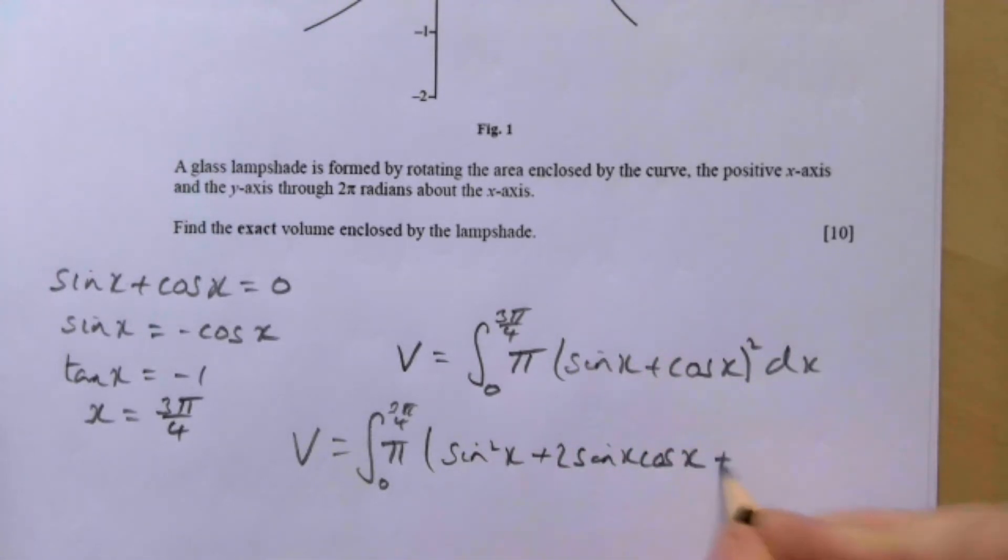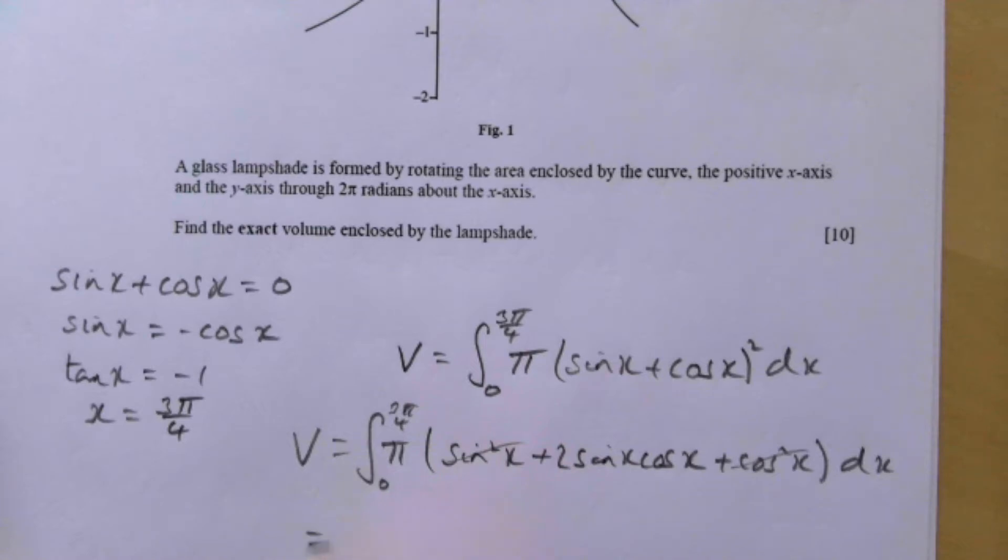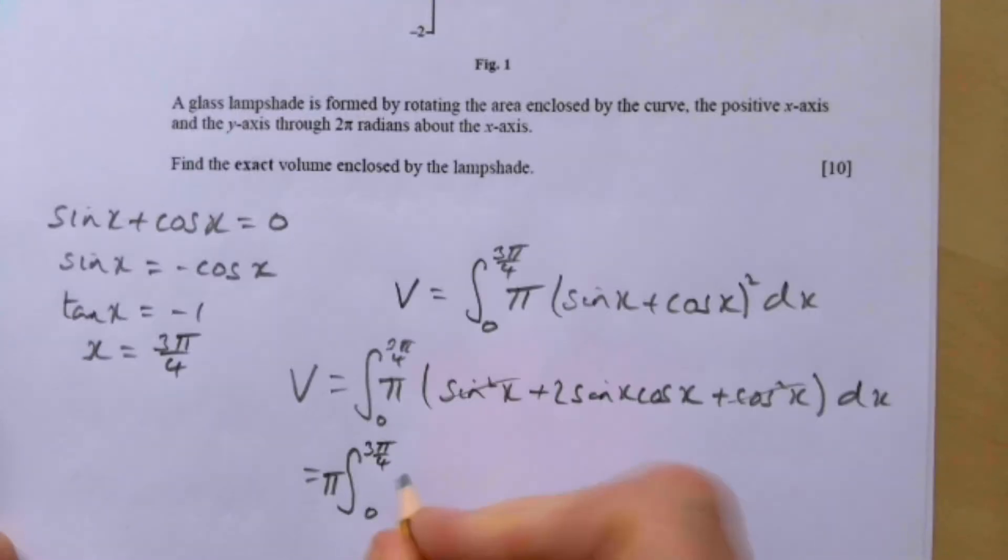Plus cos squared x dx. Hopefully you see what's going to happen—sine squared plus cos squared is just one, so we can tidy this up. That means it's going to be the integral, this time I'm going to take the π at the front, three pi over four, one plus two sine x cos x dx.